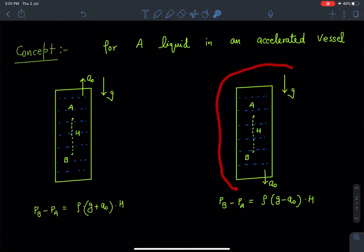So this pressure difference between B and A we can write it as ρ(g - a_not)H. These expressions you can obtain by many methods.